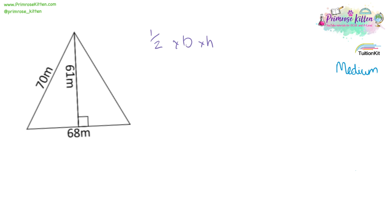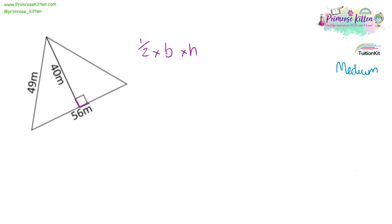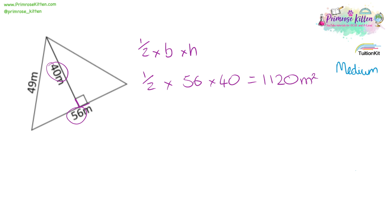A half times base times height — find the numbers associated with the right angle. The numbers associated with the right angle are these ones. So we have a half times 56 times 40, which equals 1,120 metres squared.